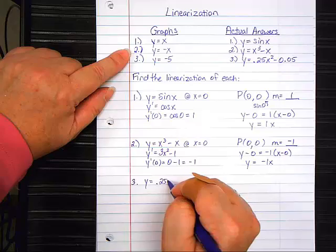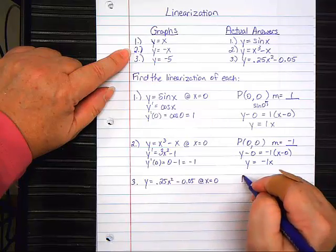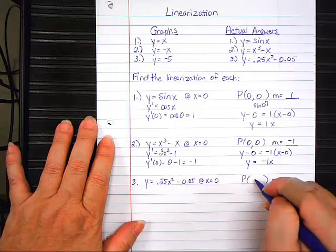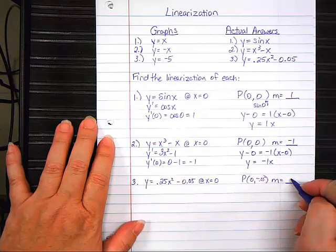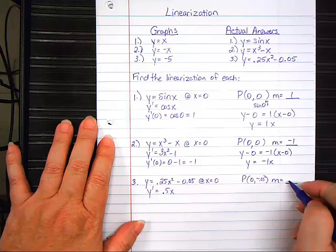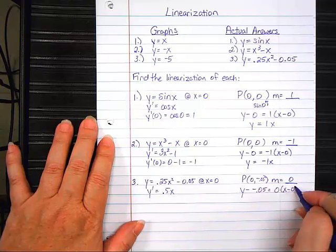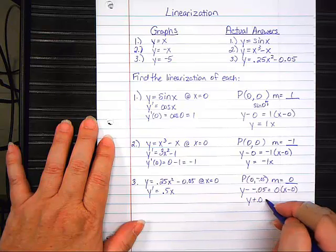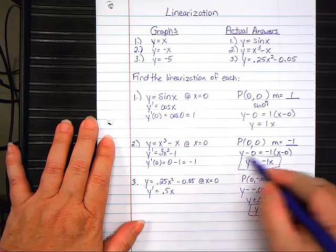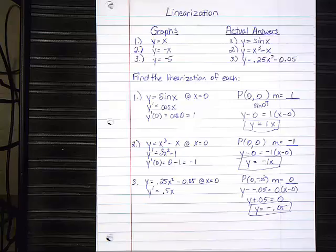Number three. Y equals 0.25X squared minus 0.05 at X equals zero. You do it with your table. So, the point is zero comma negative 0.05. The derivative is 0.5X. When you plug in zero, you get zero. Y plus 0.05 equals zero. Y equals negative 0.05. There's that one. Easy enough, right?